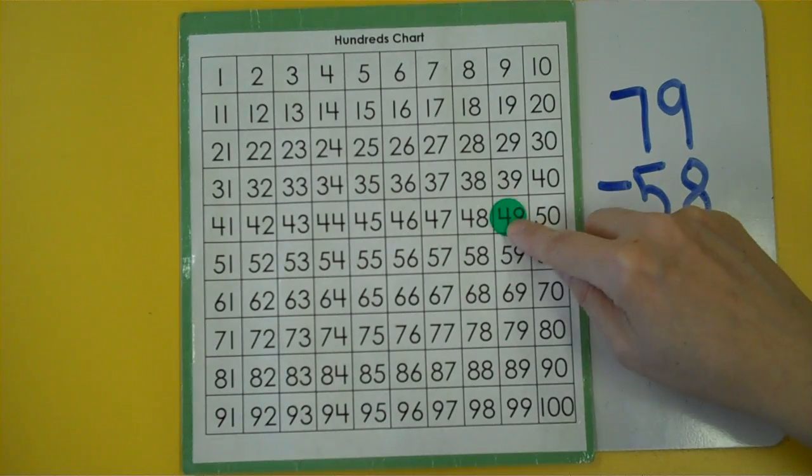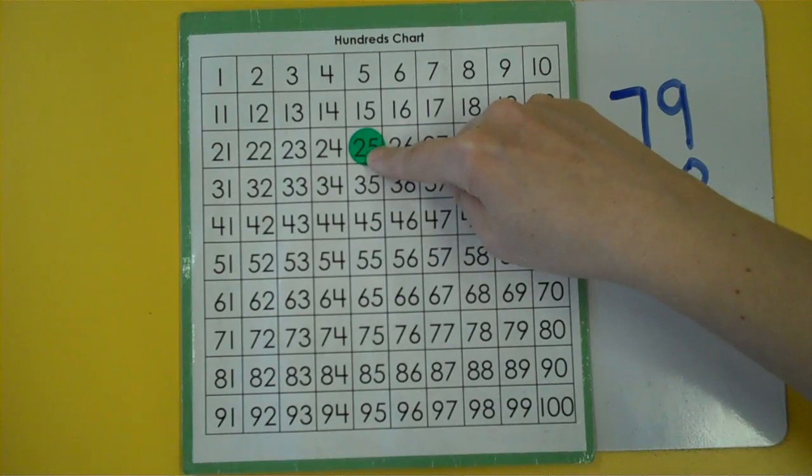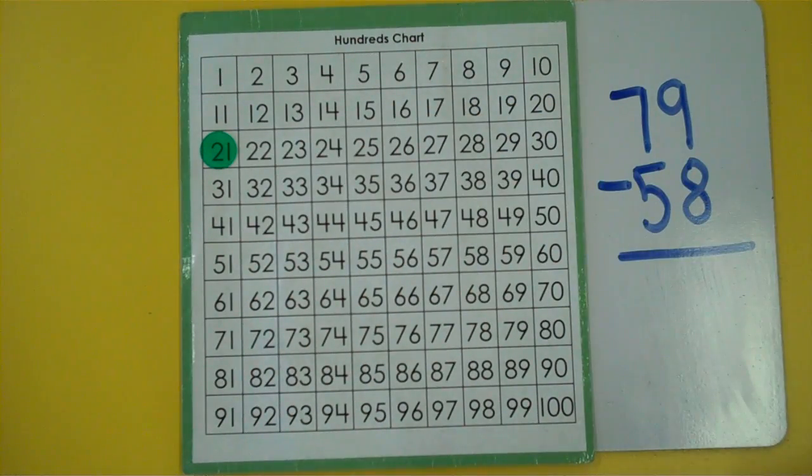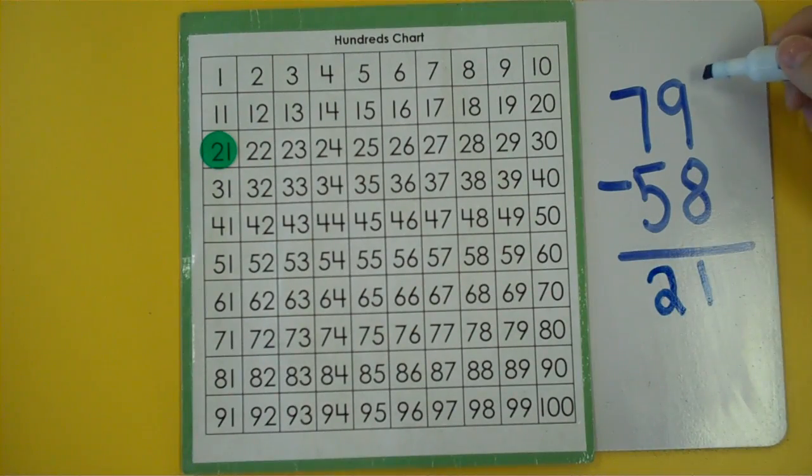10, 20, 30, 40, 50, 51, 52, 53, 54, 55, 56, 57, 58. Got the same number both times. 79 take away 58 is 21.